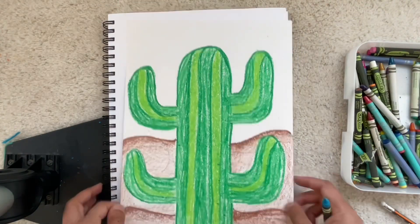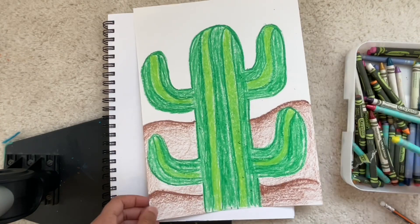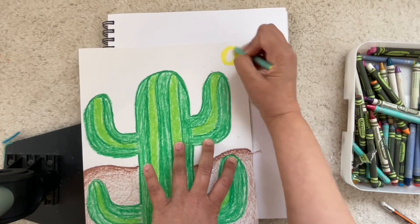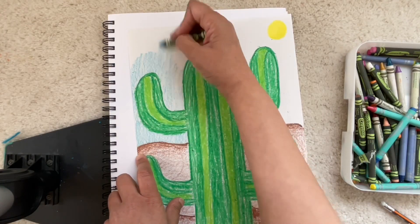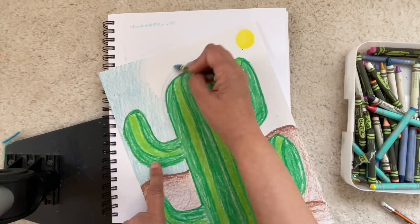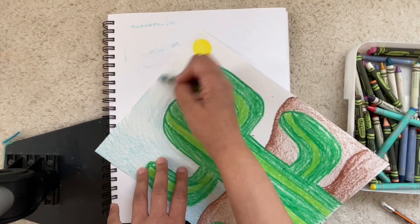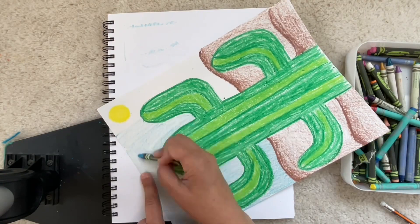Perfect. Then I'm going to take a yellow, draw the sun in the corner and very lightly color around my cactus. Very lightly.